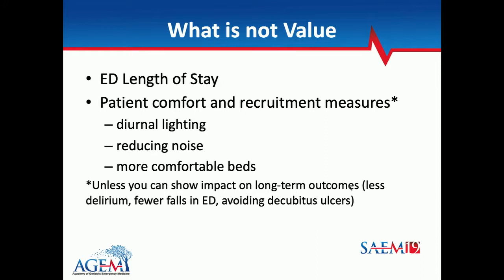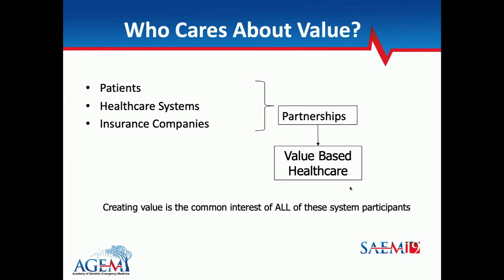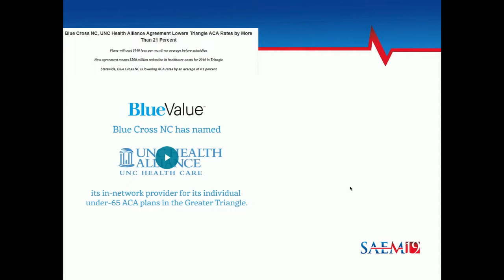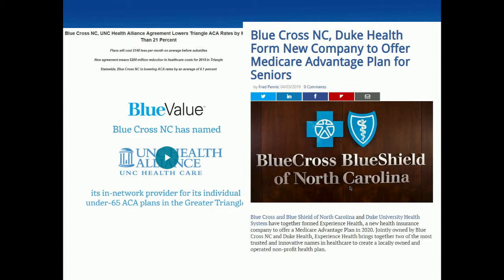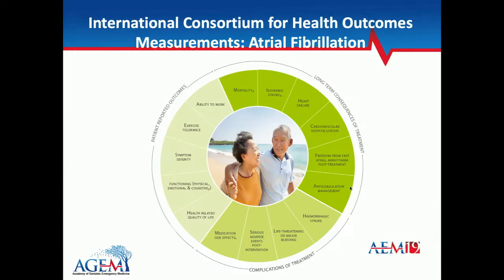In theory, value crosses both patients, insurers, and the healthcare system. In North Carolina this is alive and well — UNC recently announced a partnership with Blue Cross to provide care, a healthcare system-insurer partnership. There are groups that have attempted to figure out how to actually measure value. One interesting group is the International Consortium for Health Outcomes Measurements — they have condition-specific outcome sets. For atrial fibrillation, for example, they look at exercise tolerance, medication side effects, and a comprehensive sense of outcomes. Sponsors include the Scottish government, which as an insurer wants good health outcomes, and pharmaceutical companies wanting to show their drugs improve health outcomes.